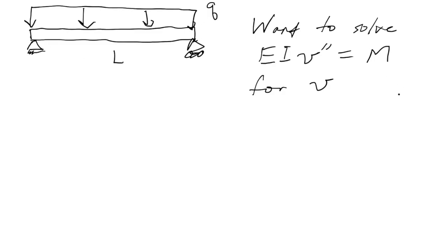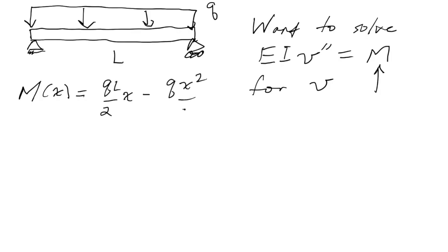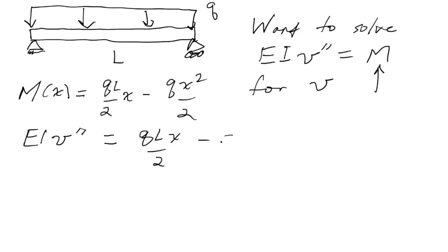Since we have the specification for the beam and its loading, we can compute the bending moment function and then integrate twice to compute v. So M(x) for this example is qL/2 · x minus qx²/2. Plugging in this specific form for M, we have EI v'' = qLx/2 minus qx²/2.